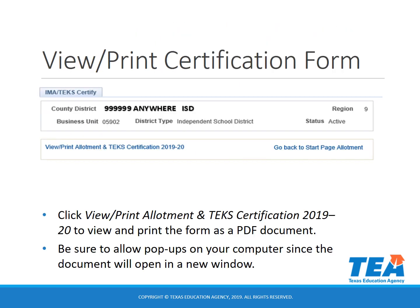After clicking save, you will need to scroll to the top of the page and click view print allotment antiques certification 2019-20 to view and print the form as a PDF document. Be sure to allow pop-ups on your computer since the document will open in a new window.